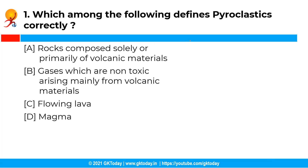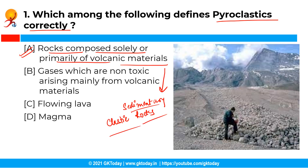The first question is: which among the following defines pyroclastics correctly? The correct answer is option A — rocks composed solely or primarily of volcanic materials. Pyroclastics are sedimentary plastic rocks composed mainly of volcanic material, where the volcanic material has been transported or reworked through mechanical action, such as by wind or water. These rocks are also termed volcanic plastics.